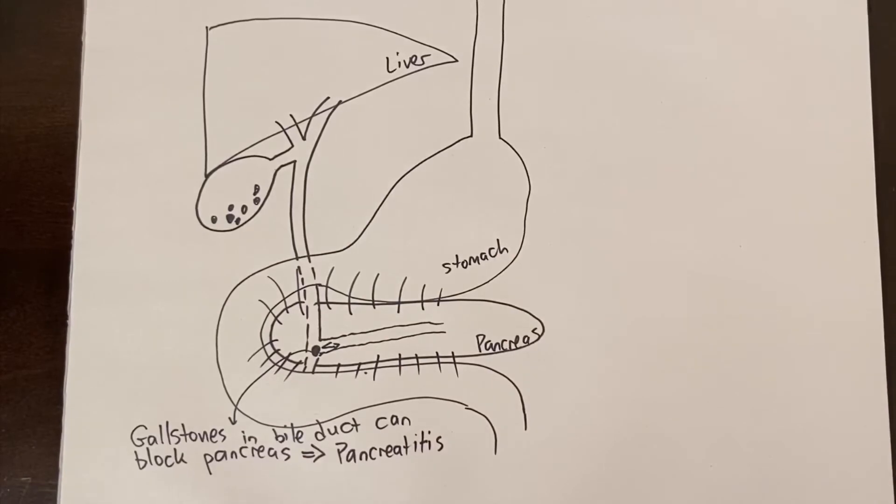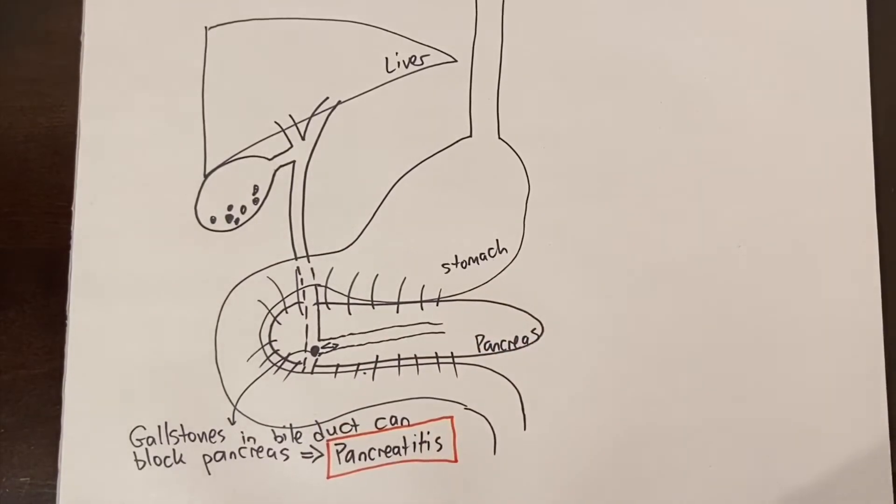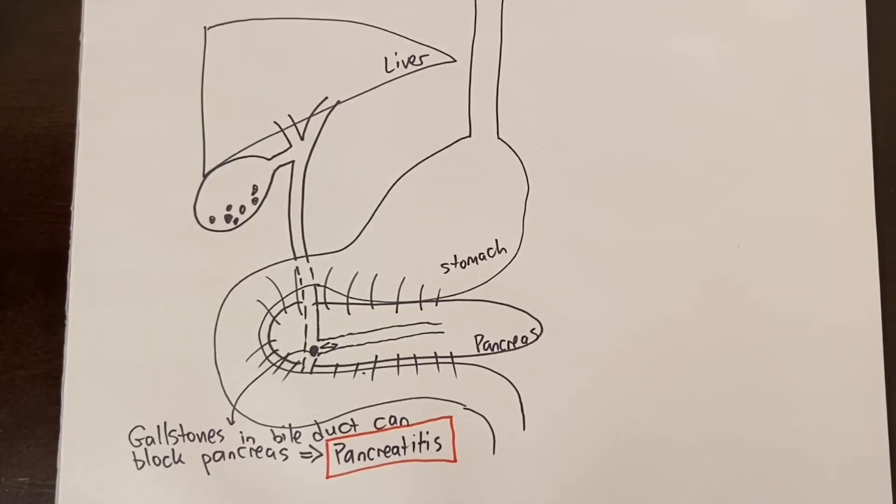Any problems caused by gallstones getting out of the gallbladder and into the main bile duct are still an indication to remove the gallbladder itself since this is the source of the stones.